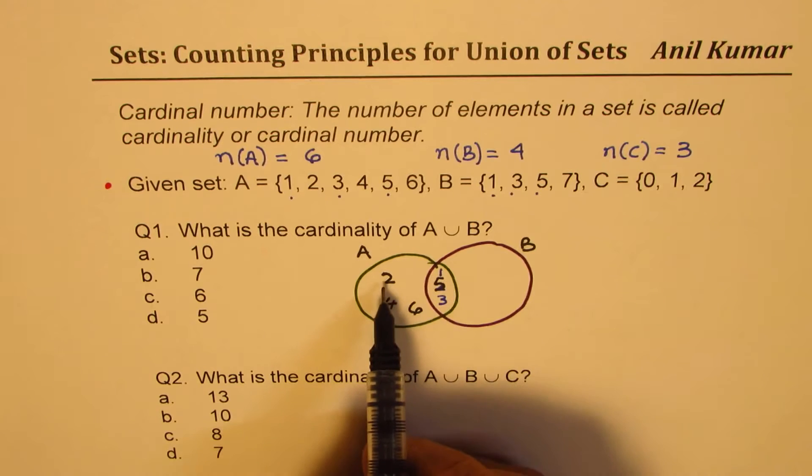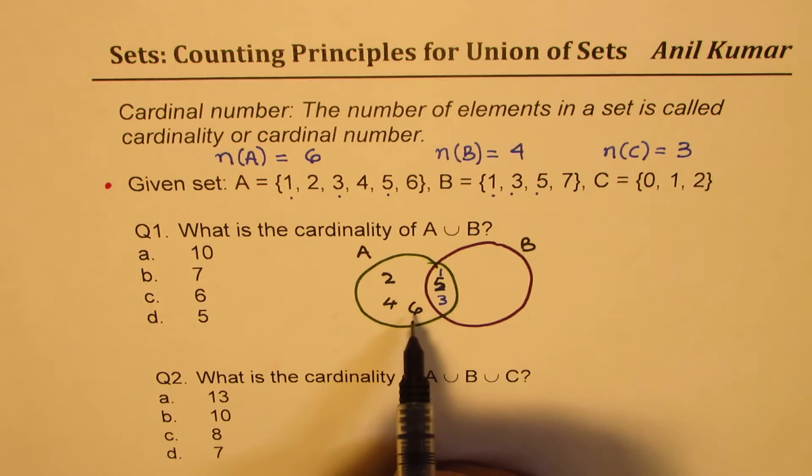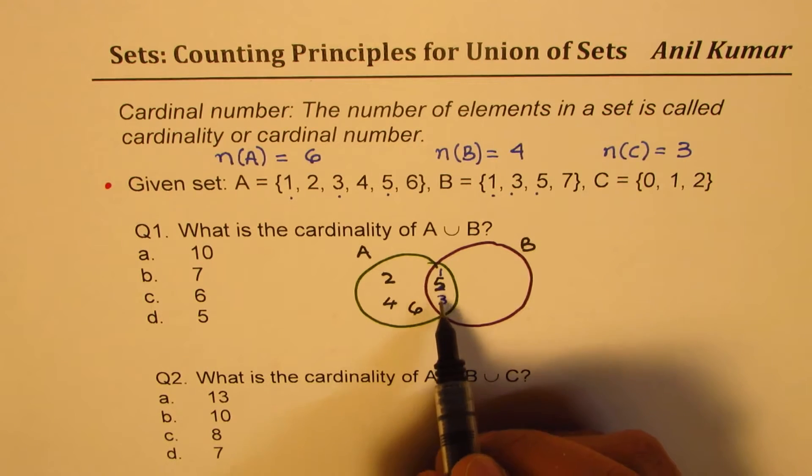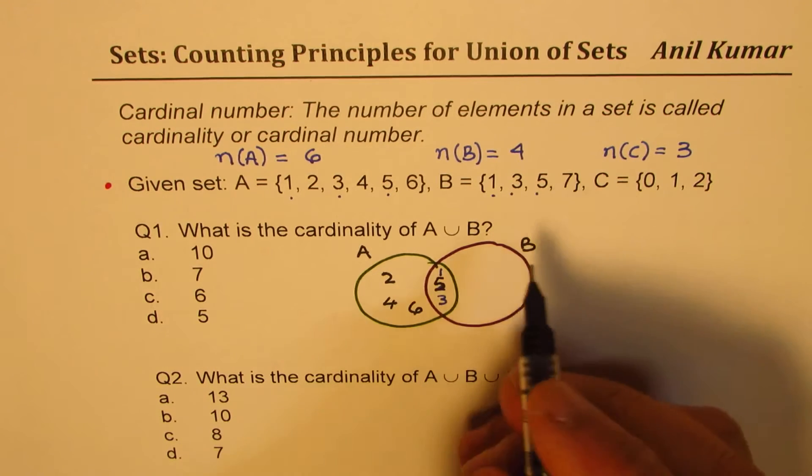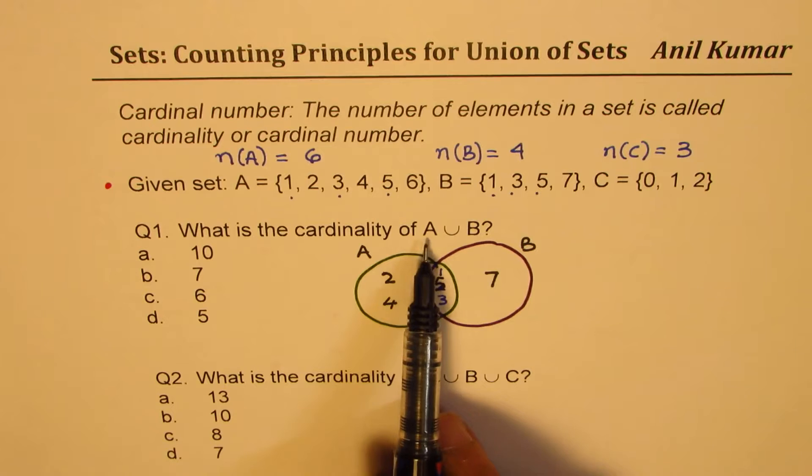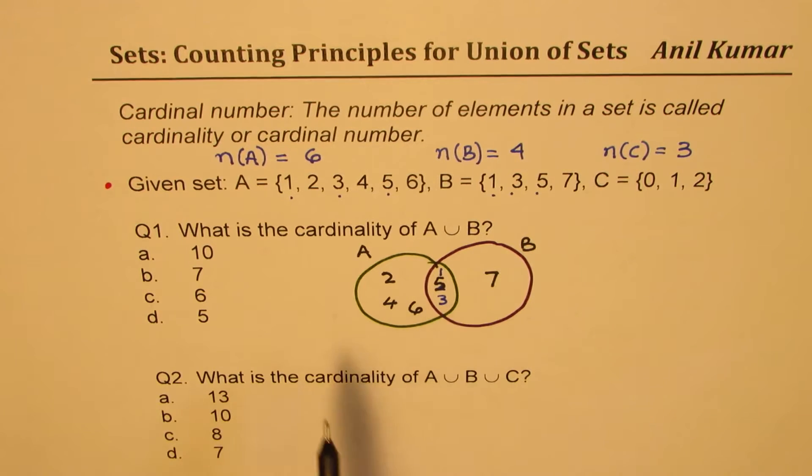As far as set B is concerned, 1, 3, and 5 have been already written. We are left with 7. So, that is how you can show A union B with the help of a Venn diagram.